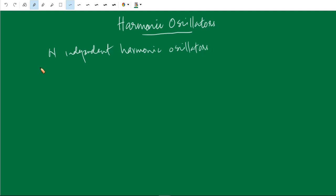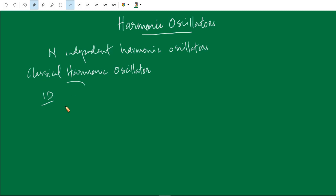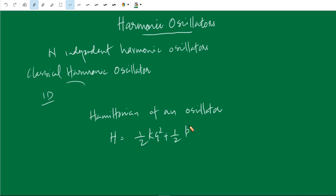Let us first consider classical harmonic oscillators. Here we only consider one-dimensional harmonic oscillators. So, let us consider n independent one-dimensional harmonic oscillators treated classically. Now, what is the Hamiltonian of one oscillator? H is equal to half k q-squared plus p-squared by 2m. For particle i, this is k q_i squared plus p_i squared divided by 2m, where i can go from 1 to n. The system consists of n one-dimensional harmonic oscillators.